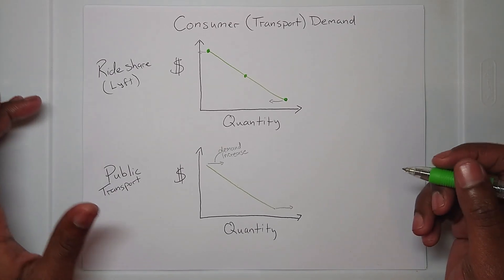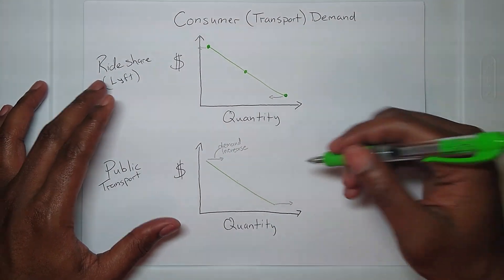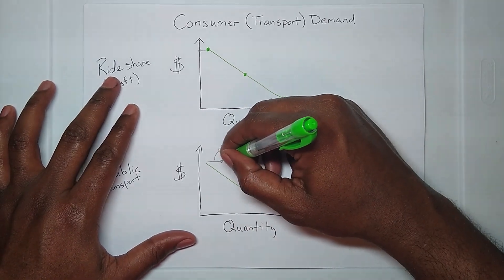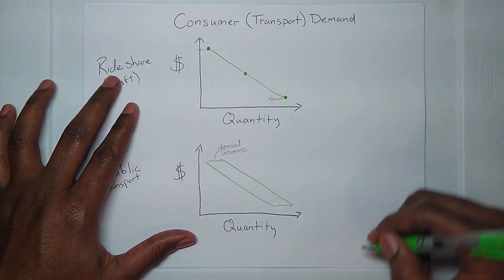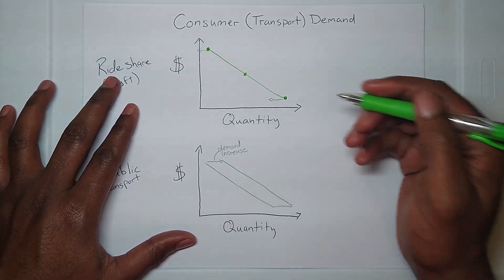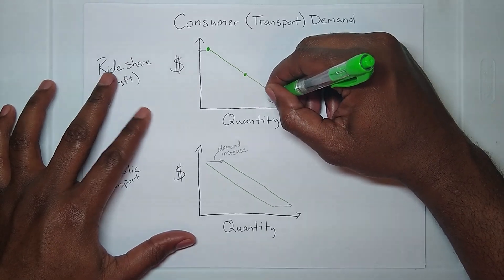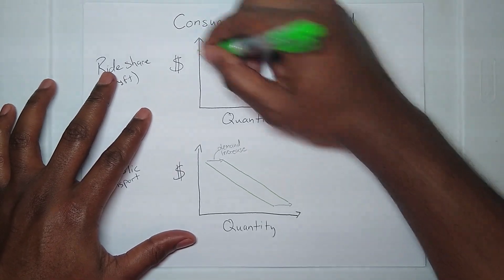Now a simplistic way of looking at this is that whenever the demand increases, your demand curve shifts to the right. In this case, this is what it will look like. Conversely, when your demand decreases, your demand curve shifts to the left. Increase right, decrease left.